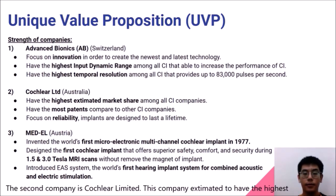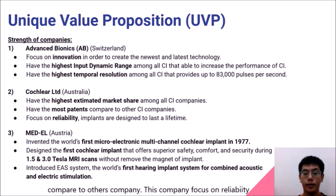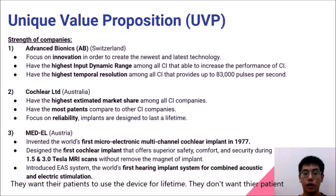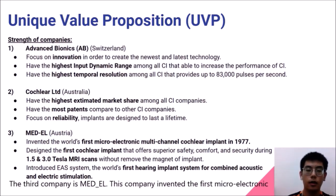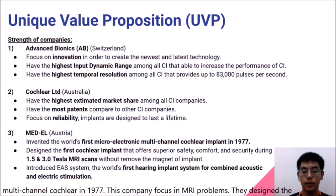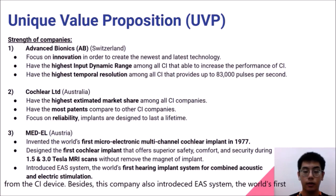The second company is Cochlear Limited, estimated to have the highest market share among the companies, and their cochlear implants also have the most patents. This company focuses on reliability — they want their patients to use the device for a lifetime and not require a second or third surgery. The third company is MED-EL, which invented the world's first microelectronics multi-channel cochlear implant in 1977. This company focused on MRI compatibility and designed the first cochlear implant compatible with 1.5 and 3.0 Tesla MRI scans without removing the magnet.